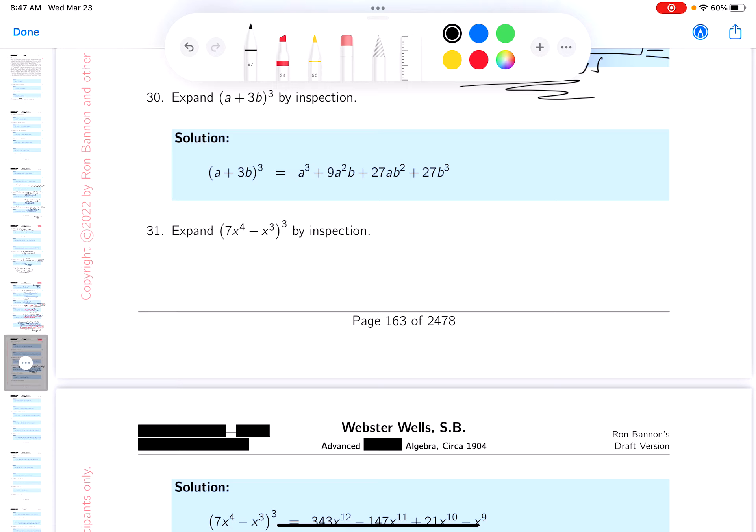Okay, this one says by inspection. This is a binomial raised to a third power and there's definitely patterns to it. You may not recognize the patterns at this point, but they're pretty simple patterns. I'm gonna write down what the pattern is.